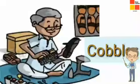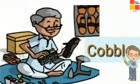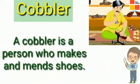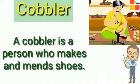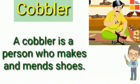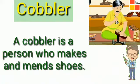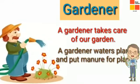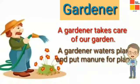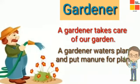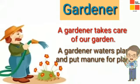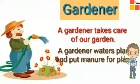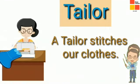Next is the cobbler. A cobbler makes our shoes and also repairs them. The word 'mends' means to repair. So a cobbler makes and repairs our shoes. Next, the gardener. A gardener takes care of our garden — waters the plants and puts manure for them. A gardener keeps everything neat and clean in our garden.